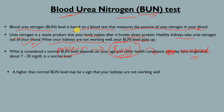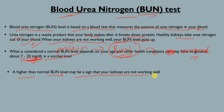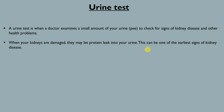A normal BUN level is generally 7 to 20 milligrams per deciliter. A BUN level higher than this normal range may be a sign that your kidneys are not working well.